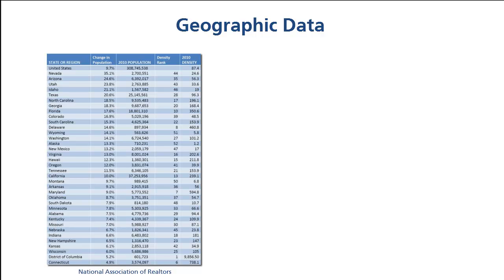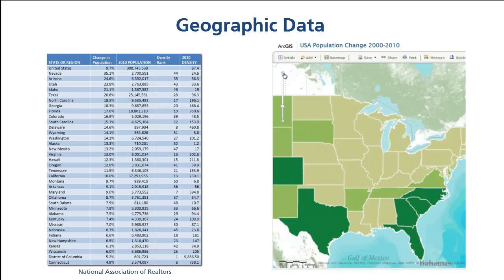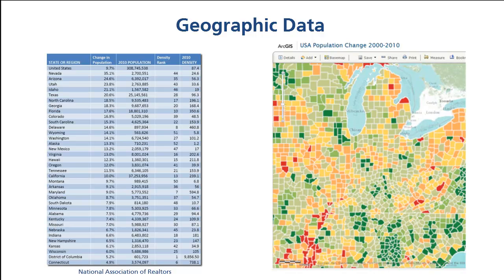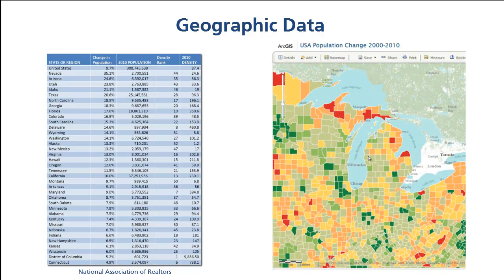Say you want to explore how the population of states across the country has changed over the past decade. You could do this with a table of numbers like this. But with a GIS, you can explore the data graphically, assigning color to population, allowing you to easily see the larger patterns and trends.